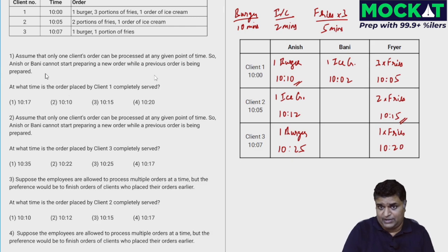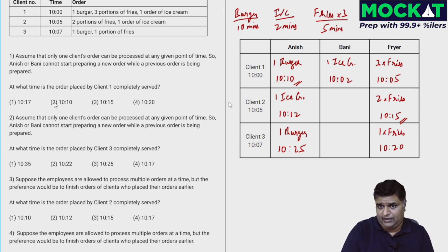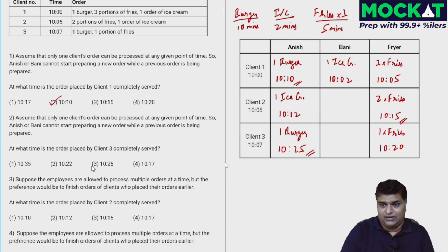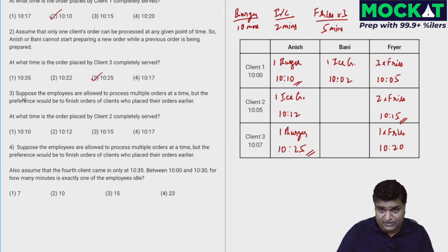So the answers: Client 1's order is completely served at 10:10 — option two is correct. Client 3's order is completely served at 10:25, the later time — option three is correct. The third and fourth questions have additional information and are different from the first two.